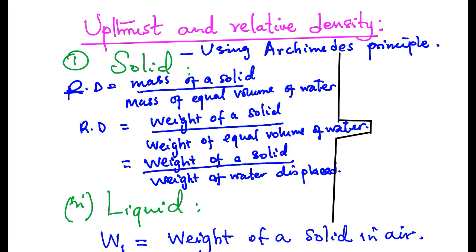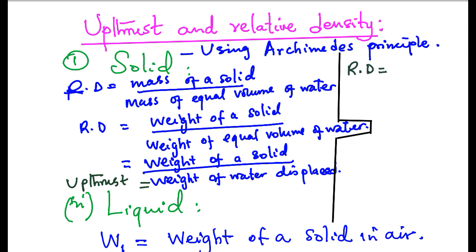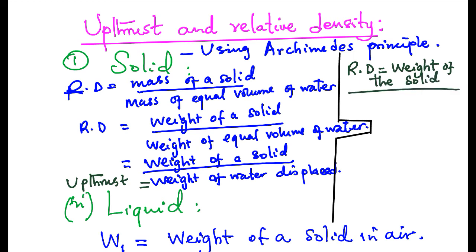Since the weight of water displaced by a solid is equal to the up thrust by Archimedes principle, the weight of water displaced is equal to up thrust. It implies therefore that relative density is equal to weight of the solid divided by up thrust of the same solid in water.